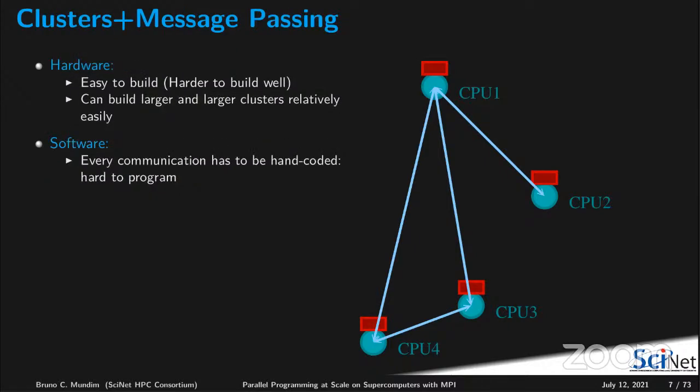In terms of hardware, a cluster is appealing because it's very easy to build. Instead of having a monolithic gigantic machine with lots of CPUs jammed together, it's much easier to have modular computer nodes connected with cables. It's very easy to expand as well — for example, Niagara expanded from 60,000 cores to 86,000 cores without a major problem by just adding compute nodes and recabling. It is very different if you have a monolithic machine — scaling that is not easy.